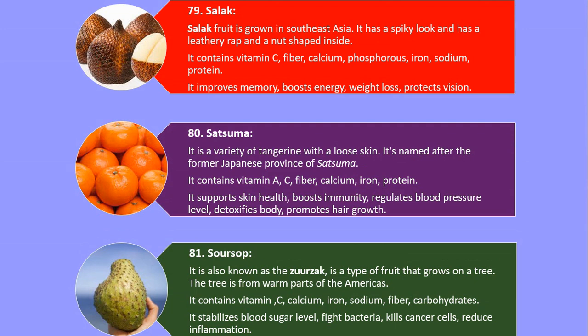Number 79. Salak. Salak fruit is grown in Southeast Asia. It has a spiky look and has a leathery wrap and a nut-shaped inside. It contains vitamin C, fiber, calcium, phosphorus, iron, sodium and protein. It improves memory, boosts energy, aids weight loss, and protects vision.